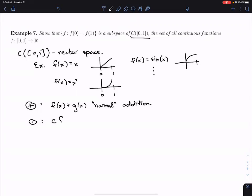And then scalar multiplication in this case is, so C is a real number, C times F(x). So again, it's the normal scalar multiplication.